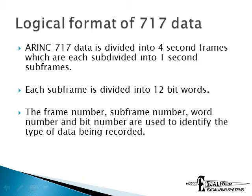ARINC 717 data is divided into 4-second frames and 1-second subframes. A specification for each aircraft will describe data types based on frame, subframe, and word. For example, subframe 1, word 8, bits 1 through 10 may contain fuel quantity.